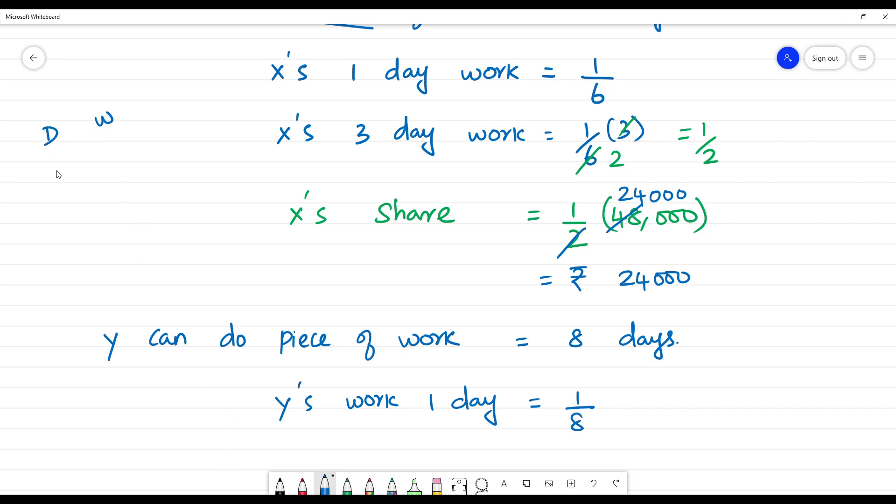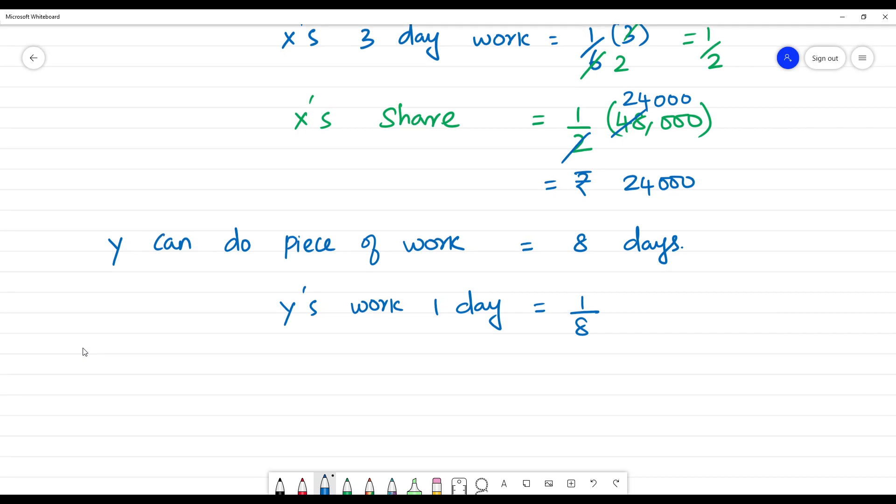Y can complete the work in 8 days, so 8 into X equals 1, X equals 1/8. So Y's work in 1 day is 1/8 of the work.